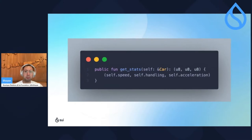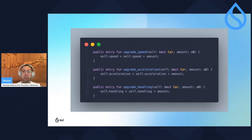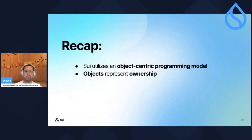SWE Move is very similar to Rust. If you want to simply get stats, you call the getStats function and pass in the car as a read-only reference because we're not mutating anything, and you'll get the three values. Similarly, if you want to change something like upgrading the speed, you pass in the car as a mutable reference — mutable because you're actually mutating the fields. You'd just call self.speed = self.speed + amount. SWE utilizes an object-centric programming model, and these objects represent ownership.